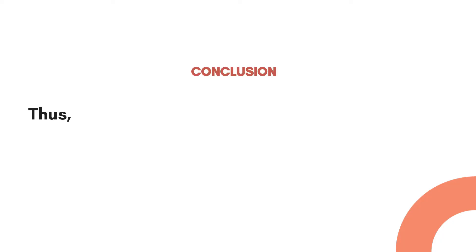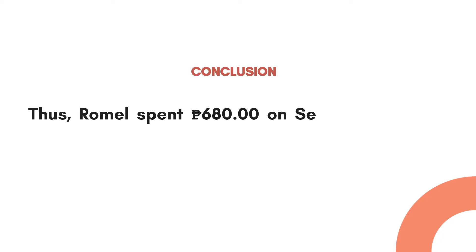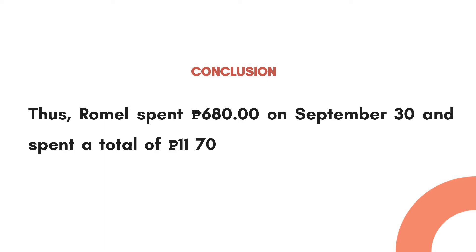Conclusion for problem number one: Rumel spent 680 pesos on September 30 and spent a total of 11,700 pesos for the entire month of September.